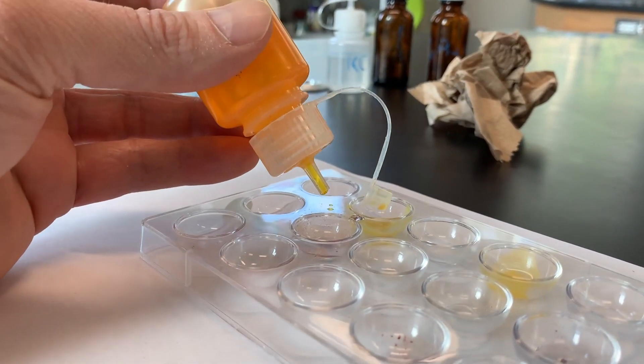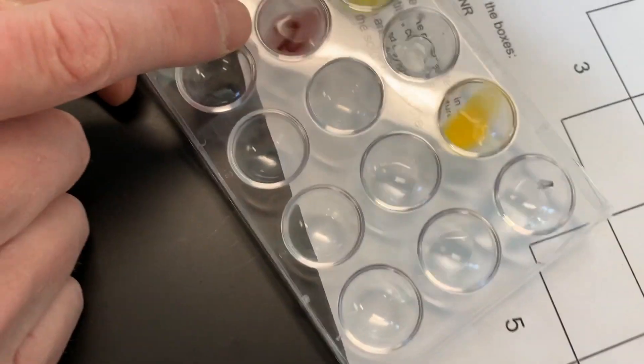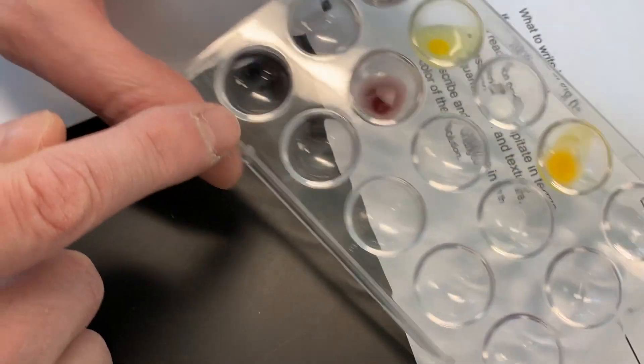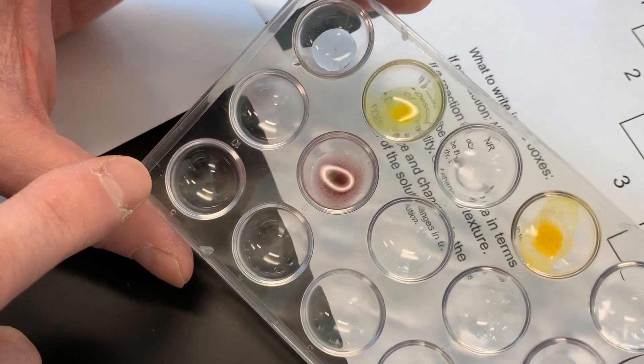One drop of sodium dichromate. Looks like a dark red powder and the solution is colorless.